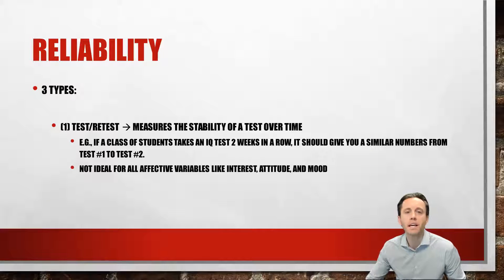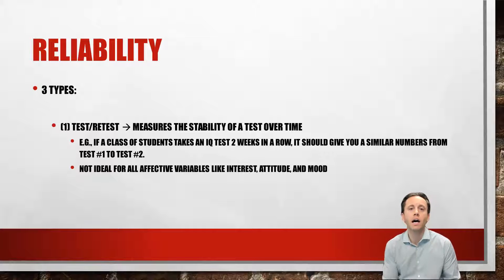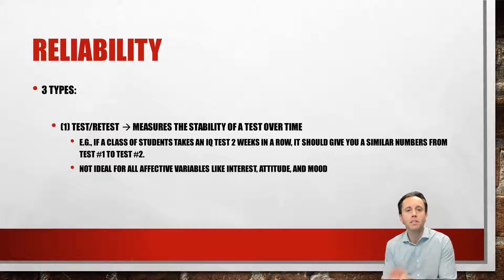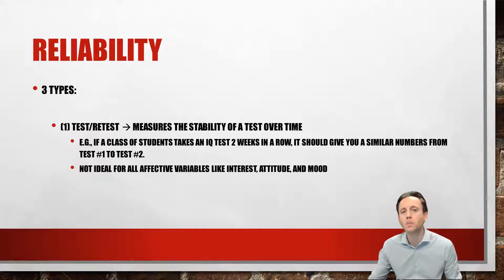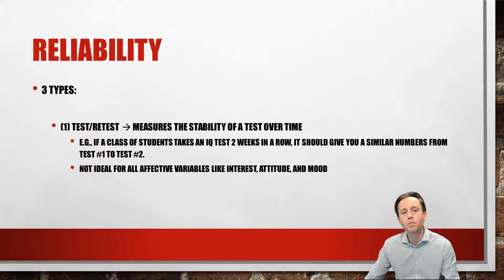There are three types of reliability we're going to be looking at today. The first type is test-retest, and that means you're measuring the stability of a test over time. Take, for instance, IQ tests or aptitude tests. If you take that this week and you also take it again next week, you should score similarly across those, because IQ typically is considered to be something that's stable over time.